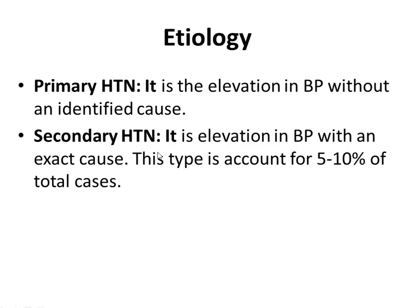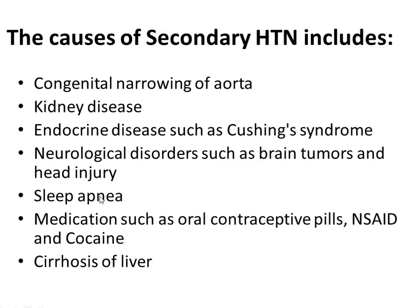Secondary hypertension accounts for five to ten percent of total cases. The causes of secondary hypertension include congenital narrowing of the aorta — if the aorta gets narrowed, hypertension can occur. Any type of kidney disease can lead to secondary hypertension, because the kidney is the major excretory organ and it controls overall osmolality of blood and also controls the salt outflow from the body, so kidney disease directly affects blood pressure.